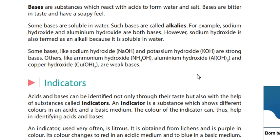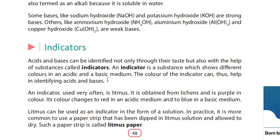Some more examples of bases not listed here include magnesium hydroxide and calcium hydroxide — they are also bases and are mild bases. Now I will talk about indicators. Indicators are those substances which identify other substances and determine whether a given substance is an acid or a base.